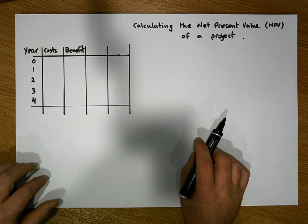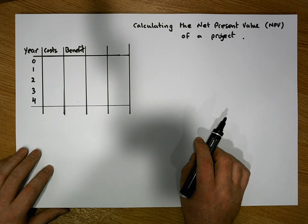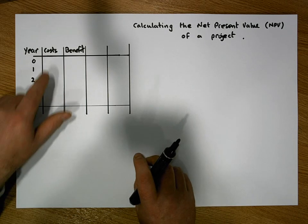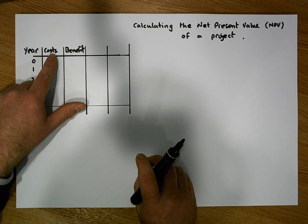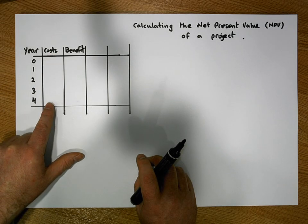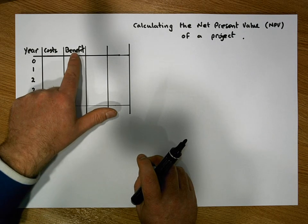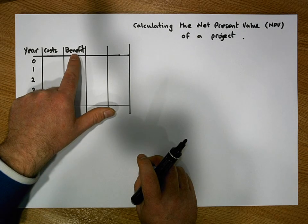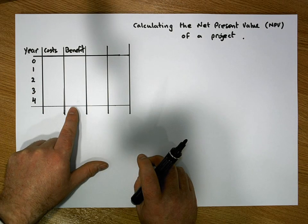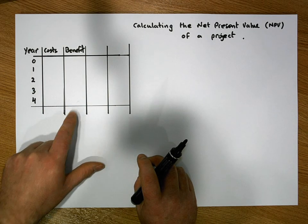This particular calculation is going to be based on a project where we've been given a series of costs over a number of years, and we've also been given a series of expected or forecast benefits for that particular project over the same period of time.